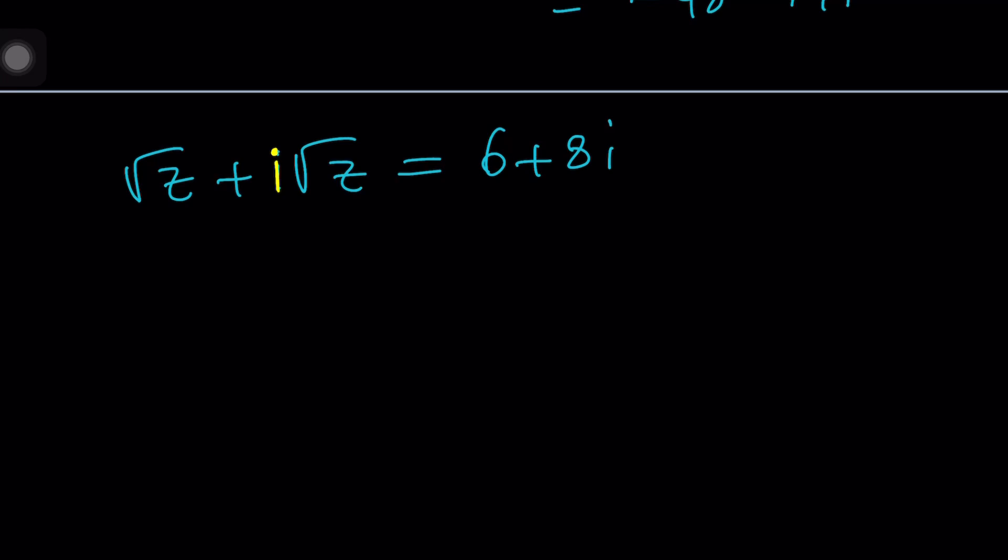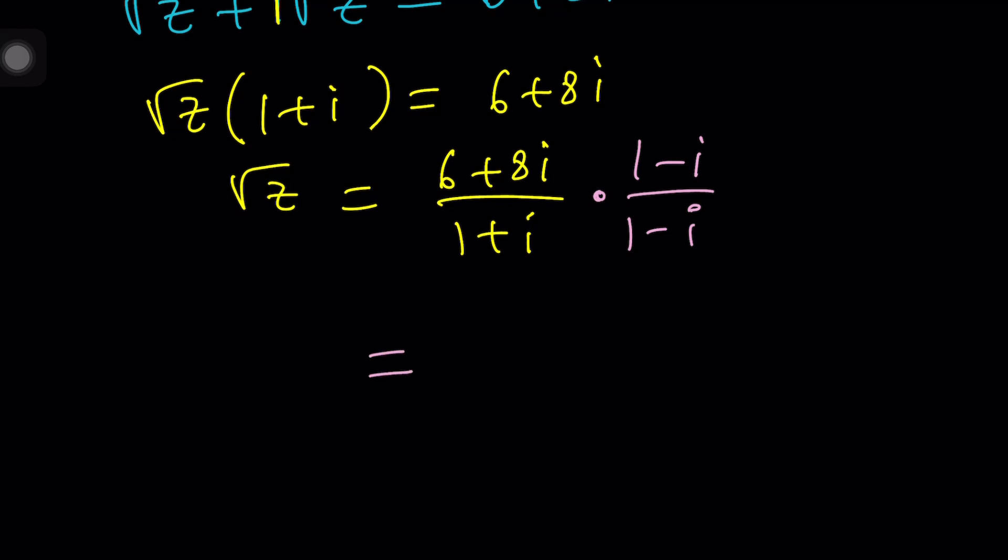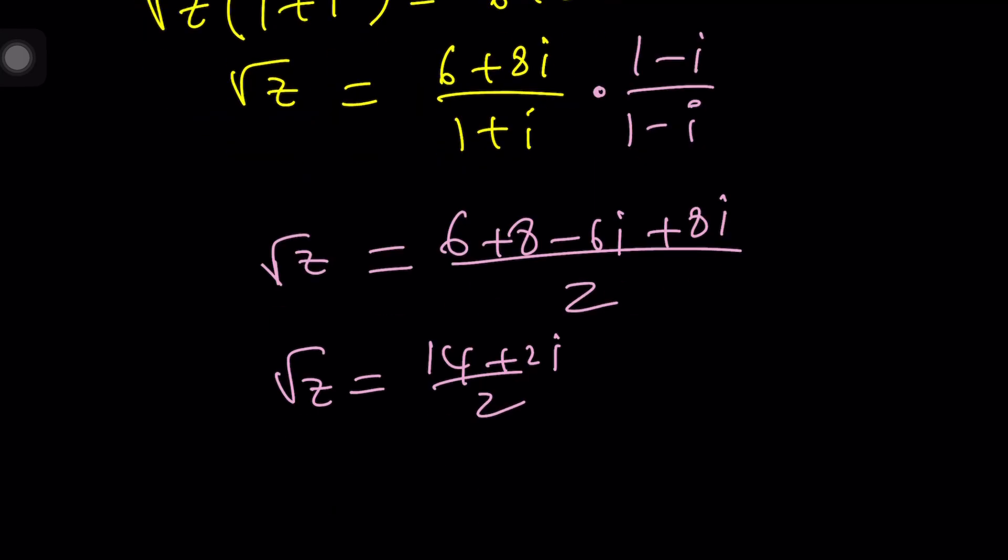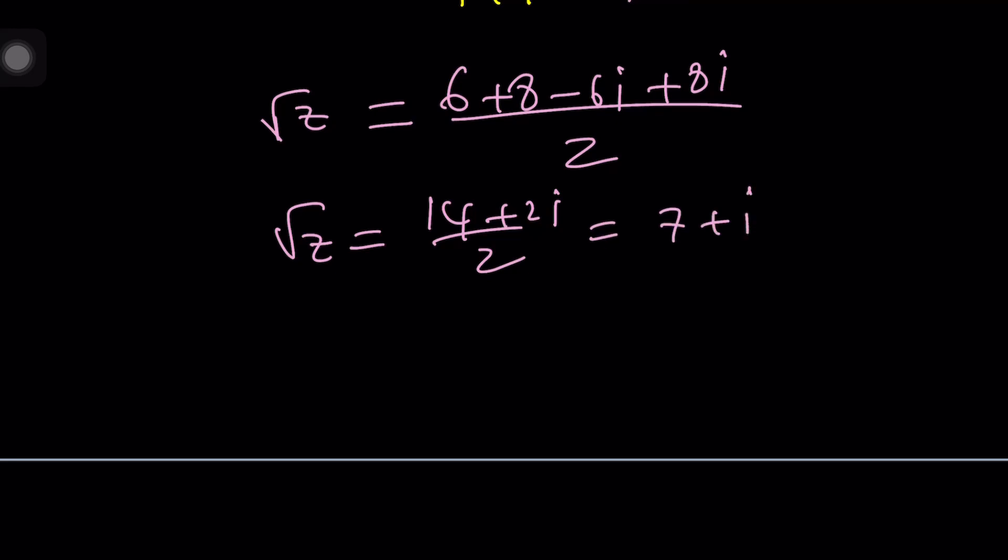We're going to multiply by the conjugates again, and that will give us something similar. 6 and then plus 8 and then minus 6i plus 8i divided by 2. And then square root of z finally becomes 14. This becomes plus 2i divided by 2, and that gives you 7 plus i. Right? And then if you square both sides, you're going to get 49 plus i squared plus 14i. This is negative 1. So z will be 48 plus 14i as before.